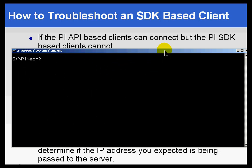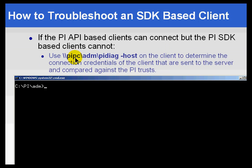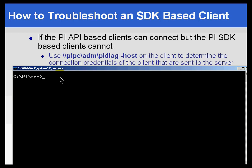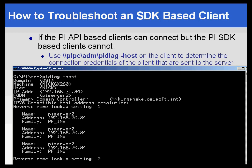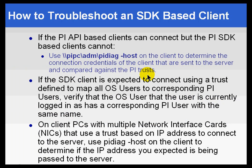You would typically not find a user running ProcessBook or DataLink on a PI Server, but this computer I'm using here is for testing purposes and does have a PI Server on it. So that utility is going to be under PI/ADM, not PI/PC. Here's the utility PI Diag-host — it's a great little utility that returns everything you ever needed to know about that connecting client: its domain, its machine name, the current Windows user that's logged in, its IP address, etc. Compare those connection credentials against what you've configured in the trust table.